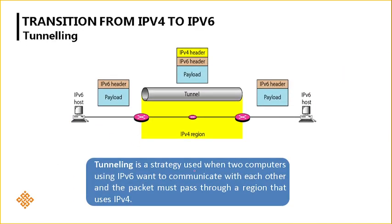Coming to the second strategy, we call it tunneling. Tunneling is a strategy used when two computers using IPv6 want to transfer data via an IPv4 region. The reason is that the region is not supporting IPv6 packets, but both nodes are configured with IPv6. So the packet must pass through a region that uses IPv4.